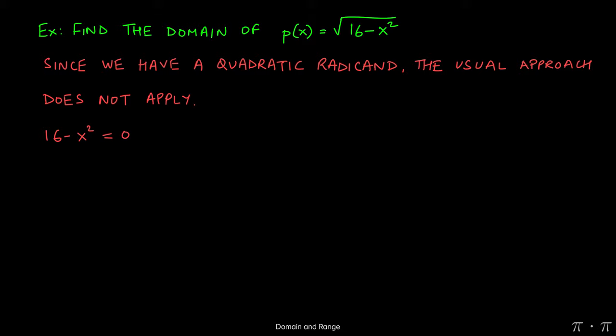Hopefully you remember that this is a difference of squares, so I can factor this into 4 plus x times 4 minus x equals 0. Now by the zero product property, I know that either 4 plus x must equal 0 or 4 minus x must equal 0. Solving each of those equations independently gives us x equals negative 4 and x equals 4.